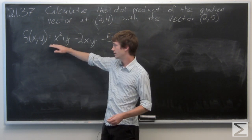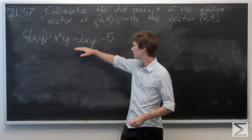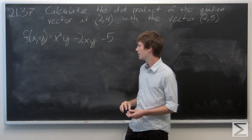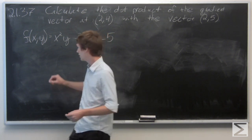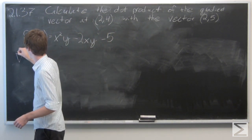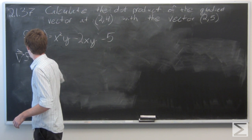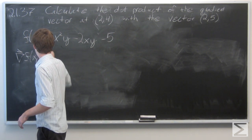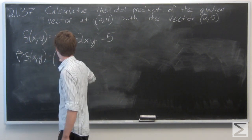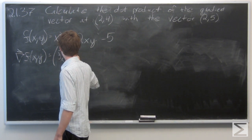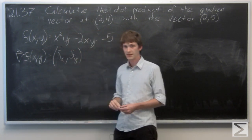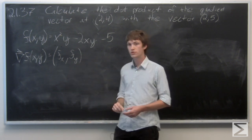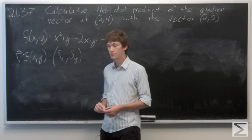So the function is x squared y minus 2xy minus 5. The gradient function vector is the partial derivative with respect to x and the partial derivative with respect to y as its two components.